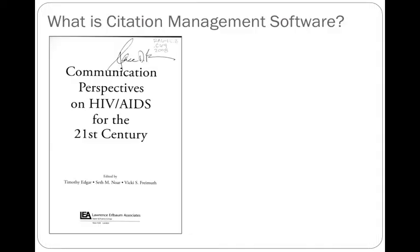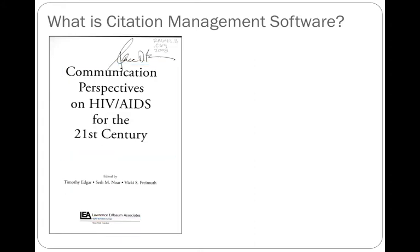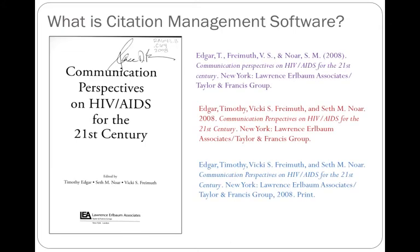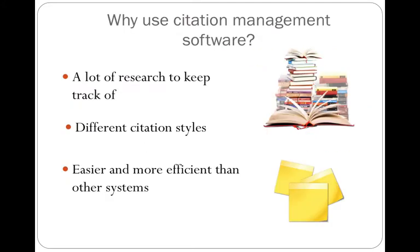Citation Management software is a program that allows you to collect the bibliographic information from the text that you're using for your research, and then format it or reformat it to create bibliographies or reference lists in whichever citation style you need. It can be really helpful, particularly to grad students, because you have a lot of research that you are trying to keep track of, and you might need to refer back to it, and it's coming in a lot of different formats.